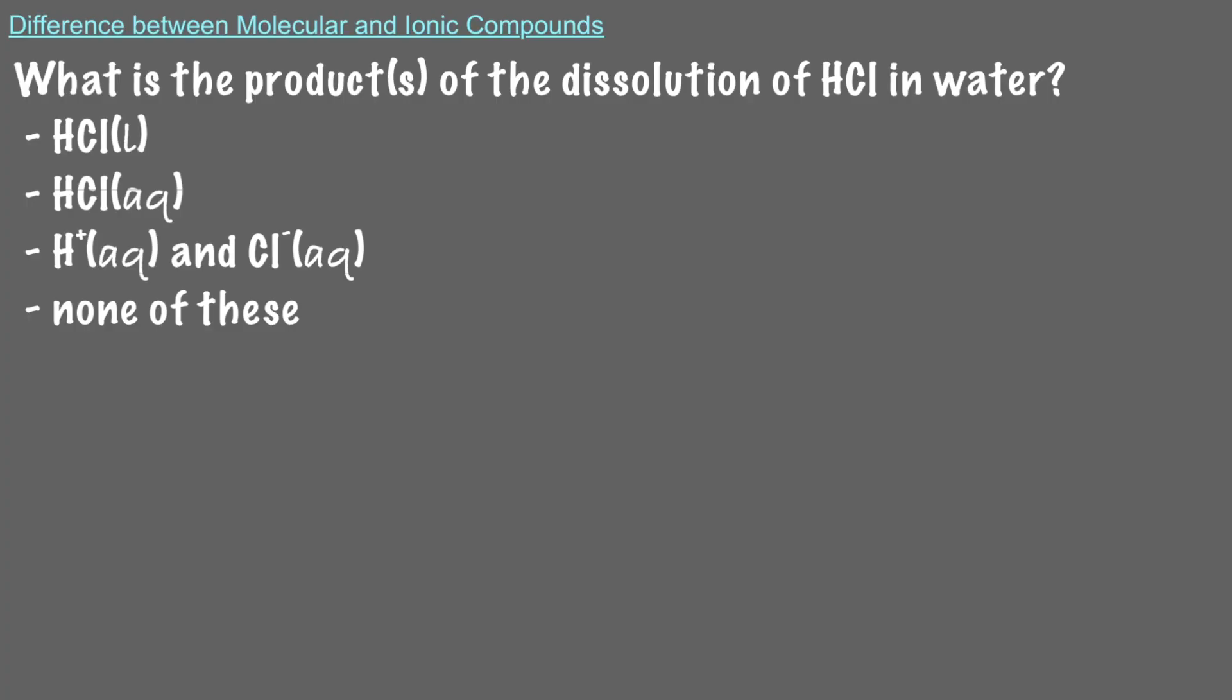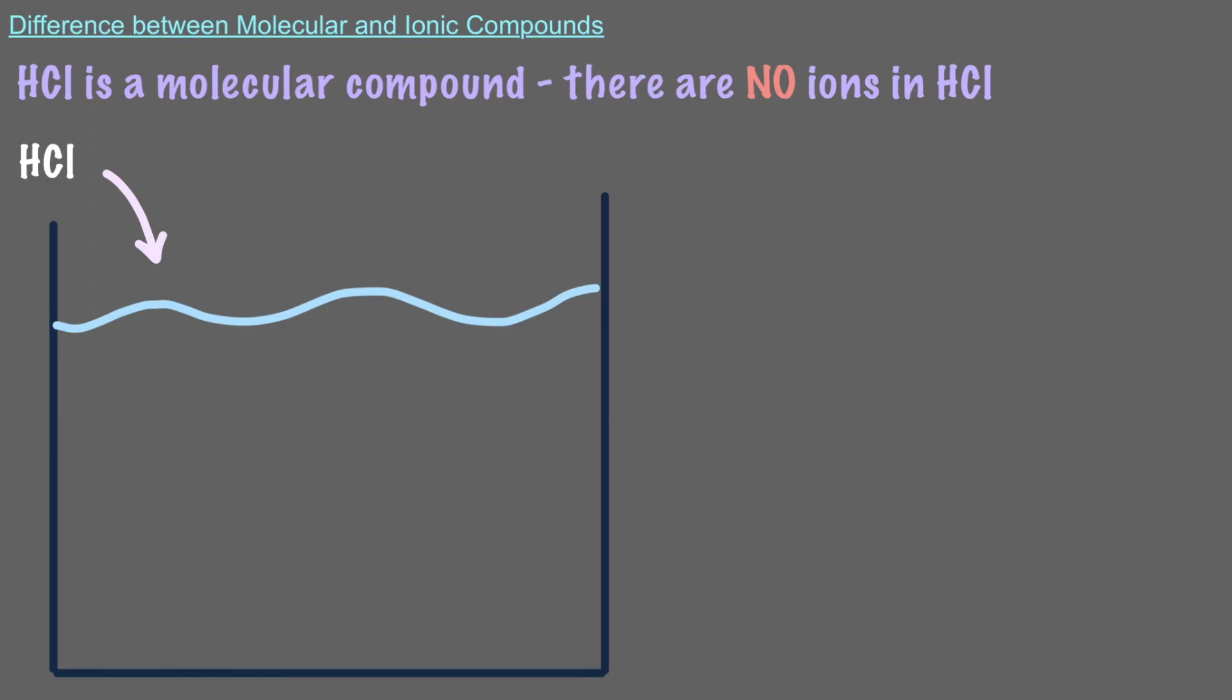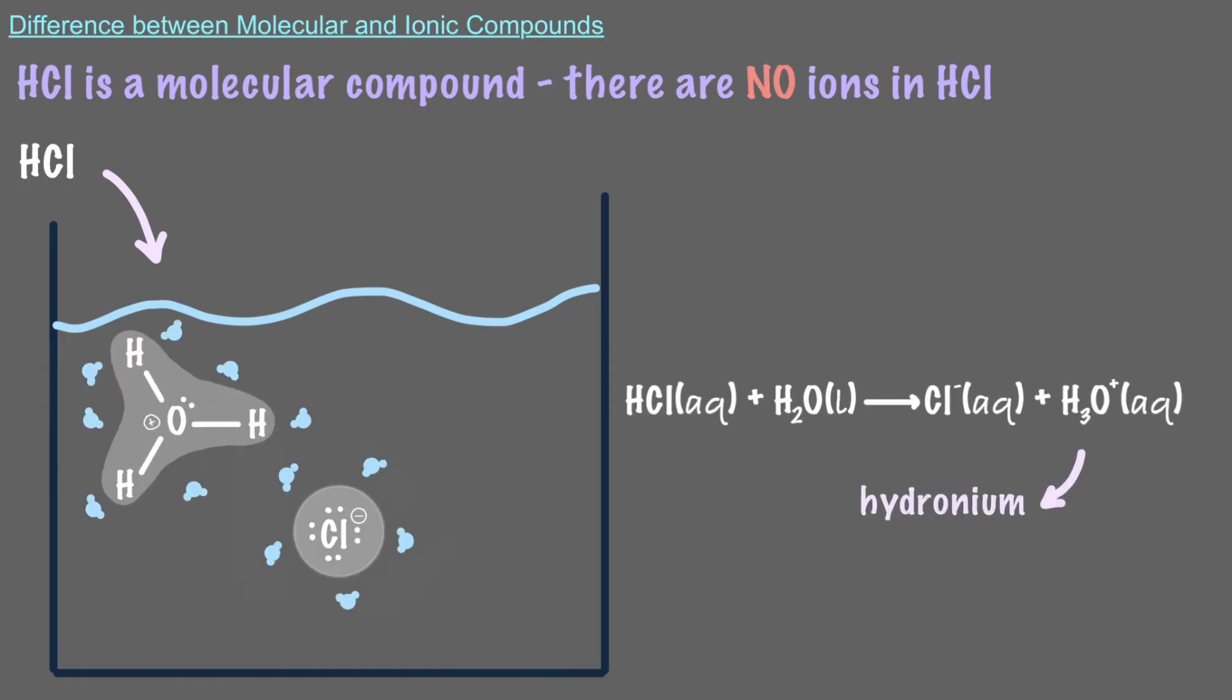Last one. What is the product or products of the dissolution of HCl in water? HCl is made up of two nonmetals, so it's a molecular compound. There are no ions in HCl, therefore it does not dissociate in water. When dissolved in water, HCl makes aqueous HCl. That said, HCl is a very strong acid, which means that after dissolving in the water, the HCl molecules will react with water to make chloride and a new species called hydronium. But that's a whole different topic for another video.